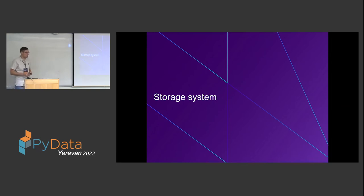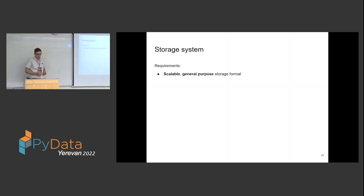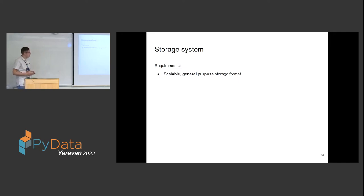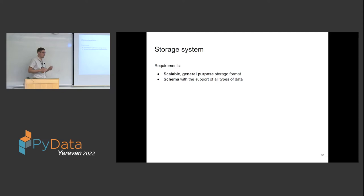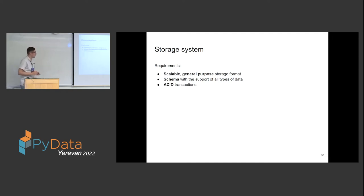We've covered the processing framework. Now let's look at the storage. What we want from the storage system: it has to be scalable and a general-purpose storage format supporting all different types of data. It has to have schema — unlike JSON or CSV which have only implicit schema, we want an enforced, well-defined schema. It has to have ACID transactions, which is very important when we have multiple writers and readers and don't want readers to see partial or corrupted data if a writer fails.